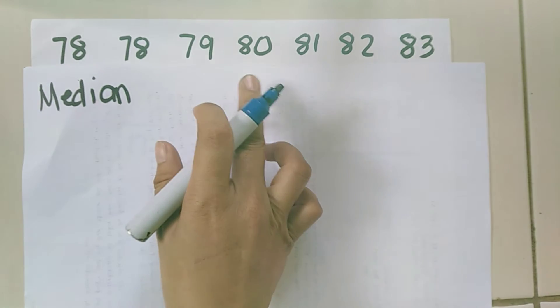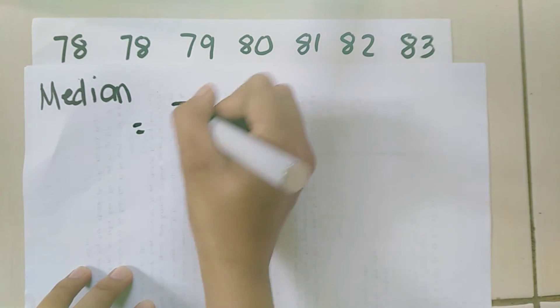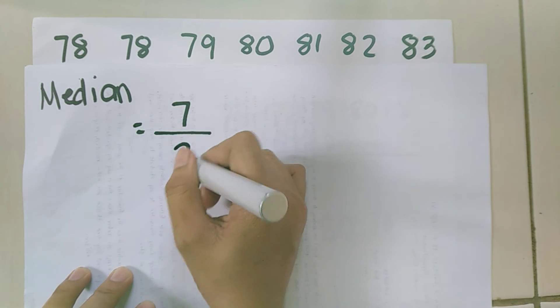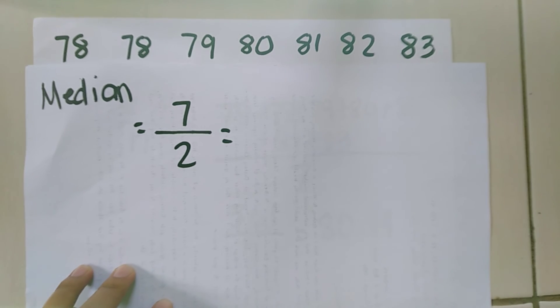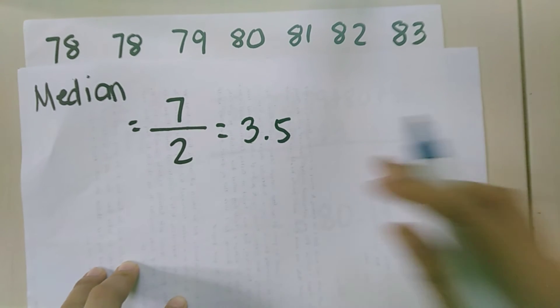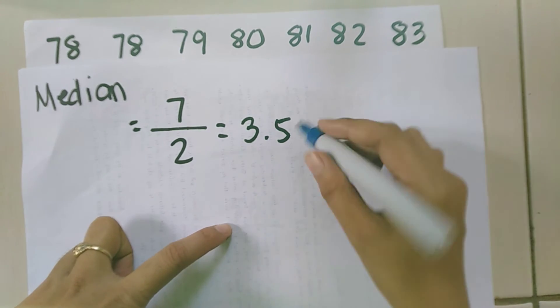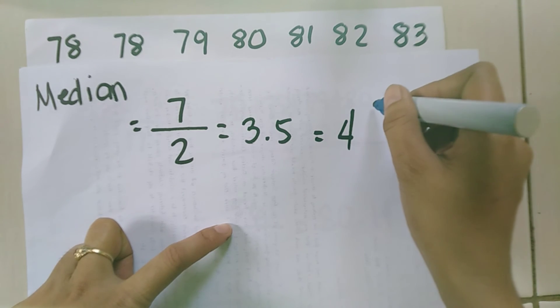Another example. Again, the first step in finding the median is to arrange our data in ascending order from least to greatest. This data is already arranged from least to greatest. Let's count how many data we have: 1, 2, 3, 4, 5, 6, 7. We have 7 data. Let us divide by 2: 7 divided by 2 is 3.5. We round off 3.5 to 4, meaning our median is in the 4th place.